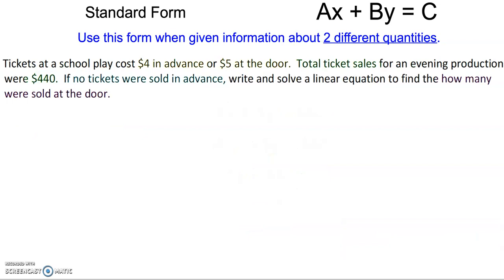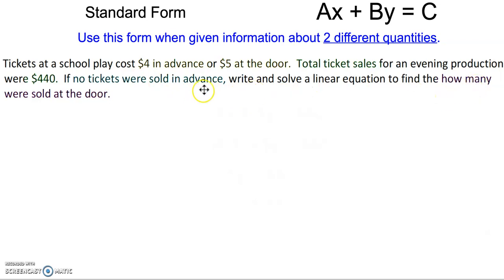The next one: tickets at a school play cost $4 in advance and $5 at the door. Total ticket sales for an evening production were $440. If no tickets were sold in advance, write and solve a linear equation to find how many were sold at the door.